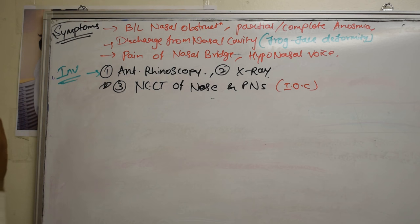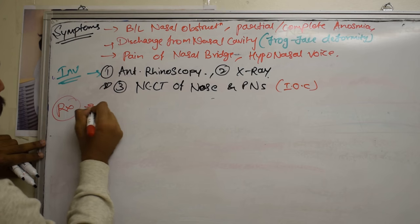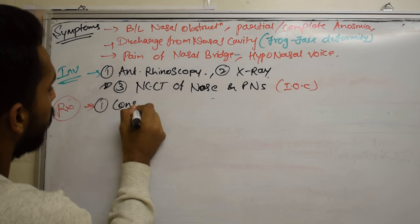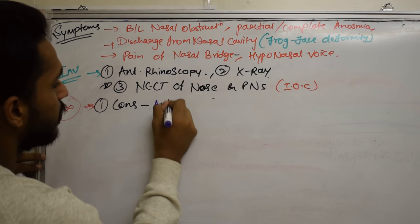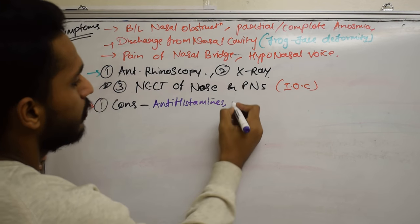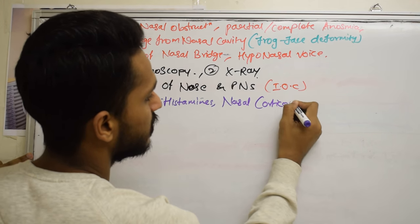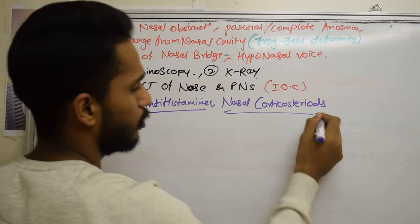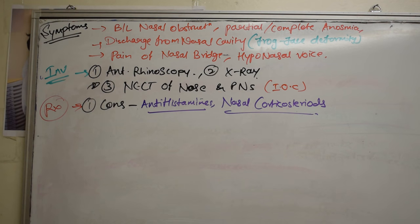For treatment, first we consider conservative treatment. We give antihistamines or nasal corticosteroids. However, both of these only provide symptomatic relief. Since recurrence is high in ethmoidal polyps, we usually proceed to surgery.